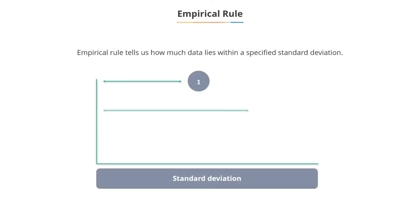Now, let us look at what Empirical Rule is. To put it simply, Empirical Rule tells us how much of the data lies within the 1, 2, and 3 standard deviations.